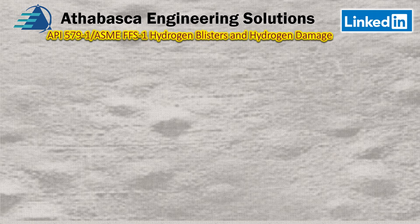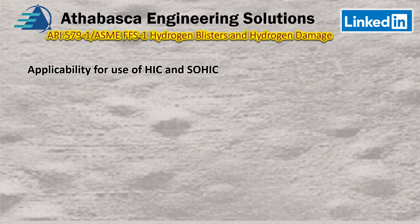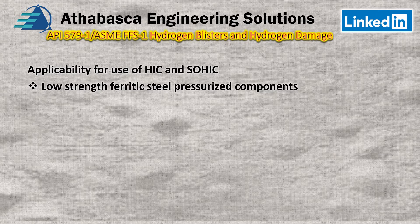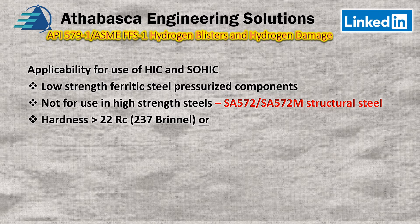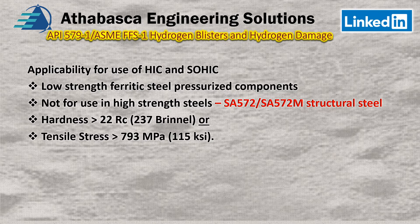The applicability of API for HIC and SOHIC: they note this is really only used for low-strength ferritic pressurized components. It is not intended for high-strength steels — a very common example is A572, where the structure has already been stressed. The hardness criterion is greater than 22 Rockwell C (or 237 Brinell, which is actually pretty soft), or the other condition is tensile strength greater than 115 KSI (793 MPa). Otherwise it's probably not applicable.